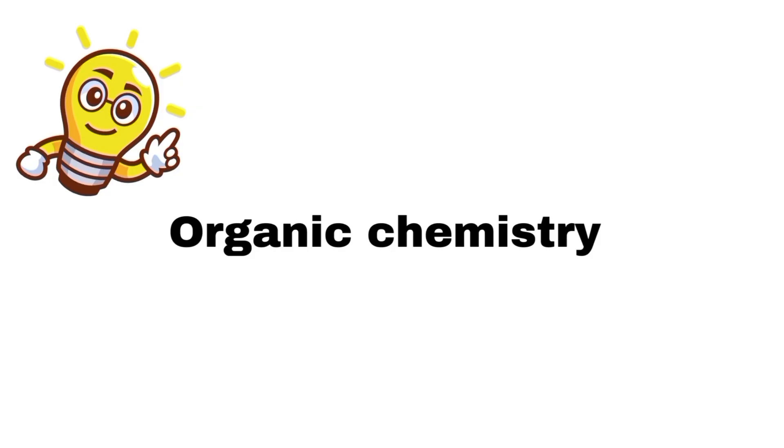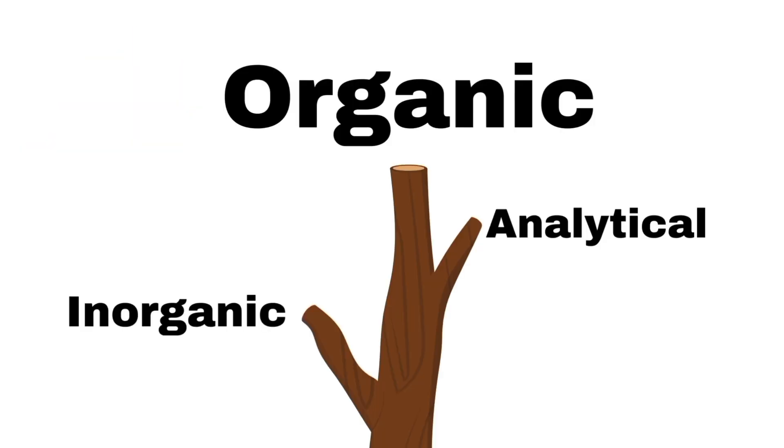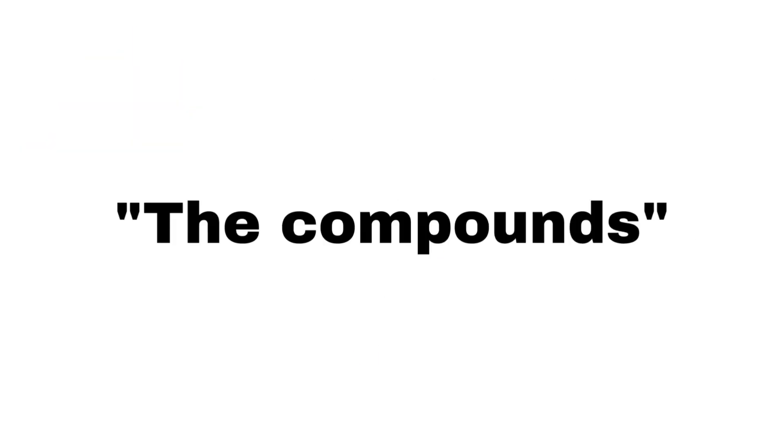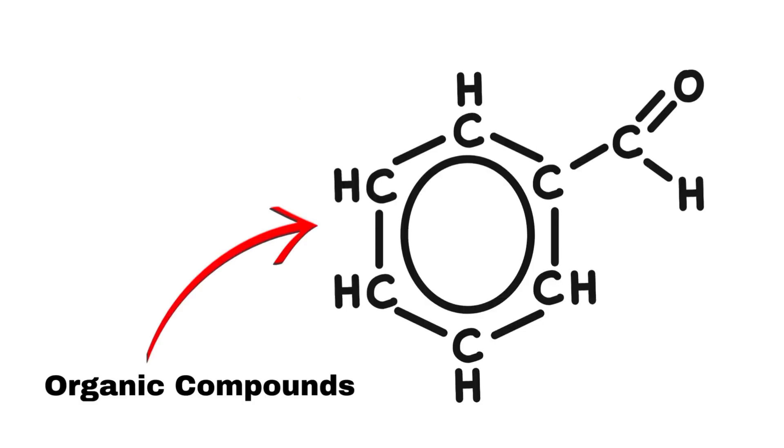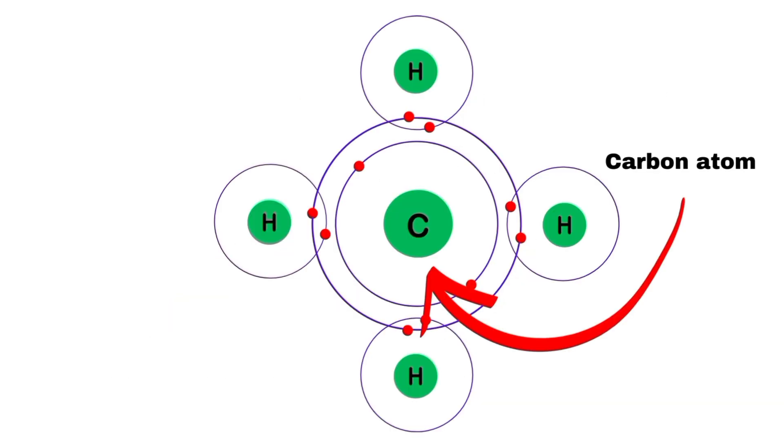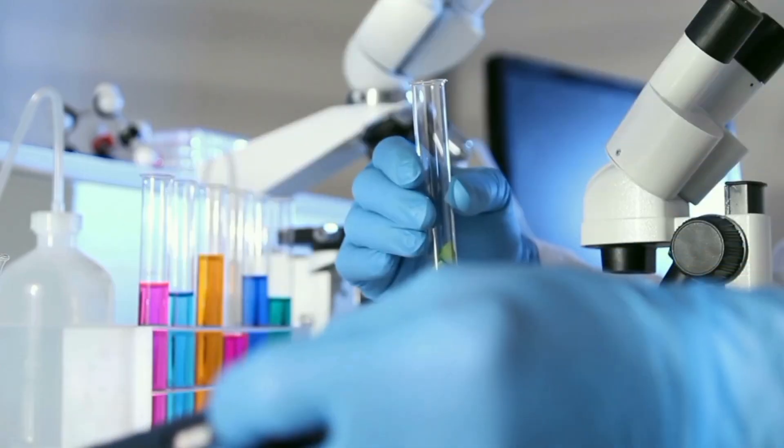Organic chemistry is the branch of chemistry that deals with compounds containing carbon atoms, but at first it was thought that organic compounds are those which are obtained from living things.